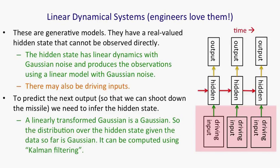One nice property that a Gaussian has is that if you linearly transform a Gaussian, you get another Gaussian. Because all the noise in a linear dynamical system is Gaussian, it turns out that the distribution over the hidden state given the observations so far is also a Gaussian. It's a full covariance Gaussian, and it's quite complicated to compute, but it can be computed efficiently. There's a technique called Kalman filtering that's an efficient recursive way of updating your representation of the hidden state given a new observation. So to summarize: given observations of the output of the system, we can't be sure what hidden state it was in, but we can estimate a Gaussian distribution over the possible hidden states, always assuming that our model is a correct model of the reality we're observing.